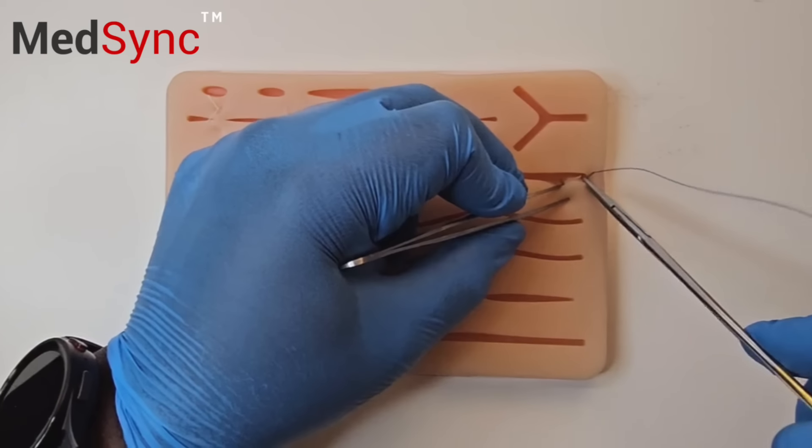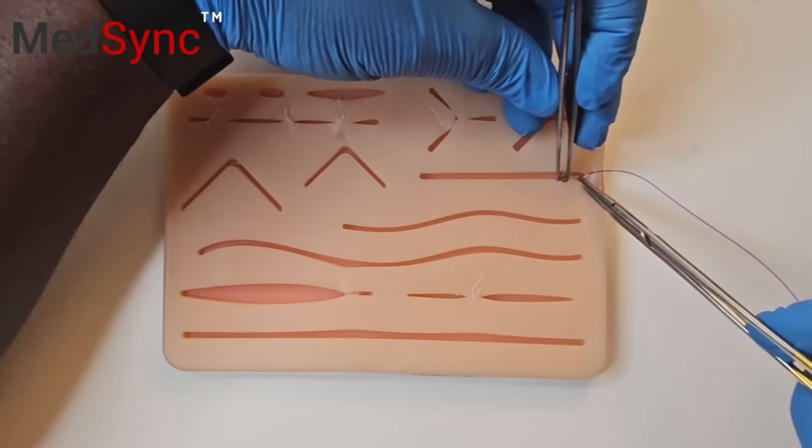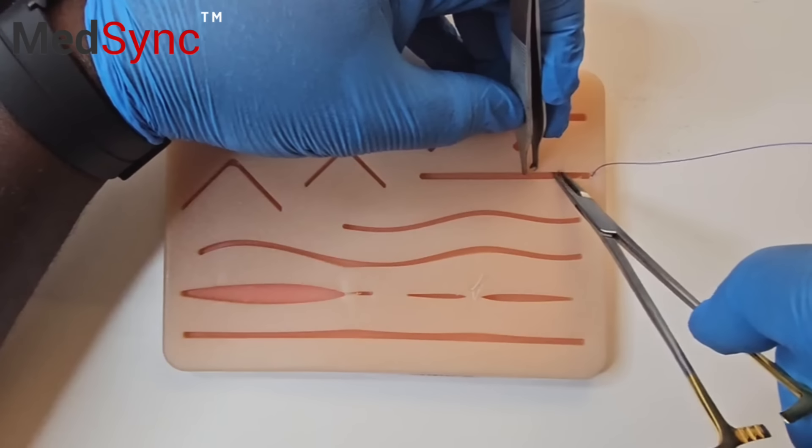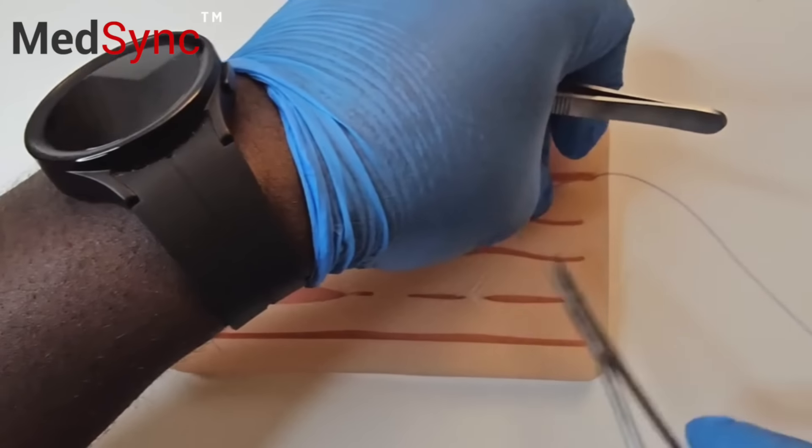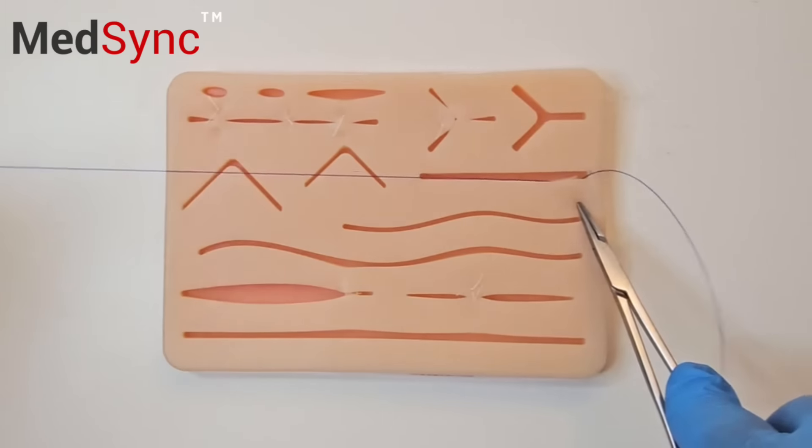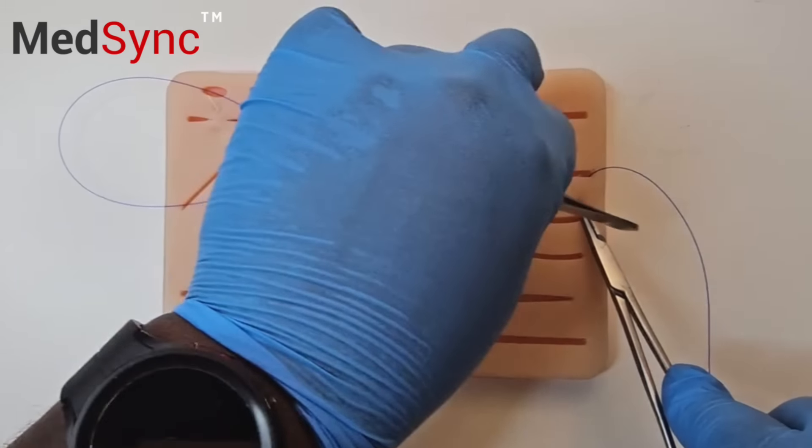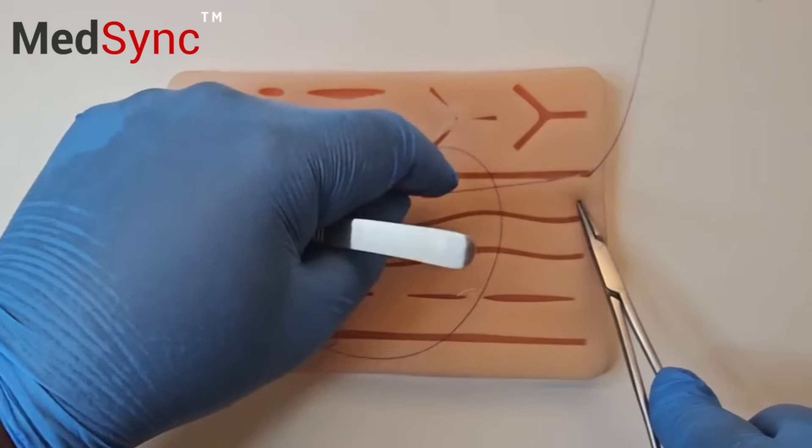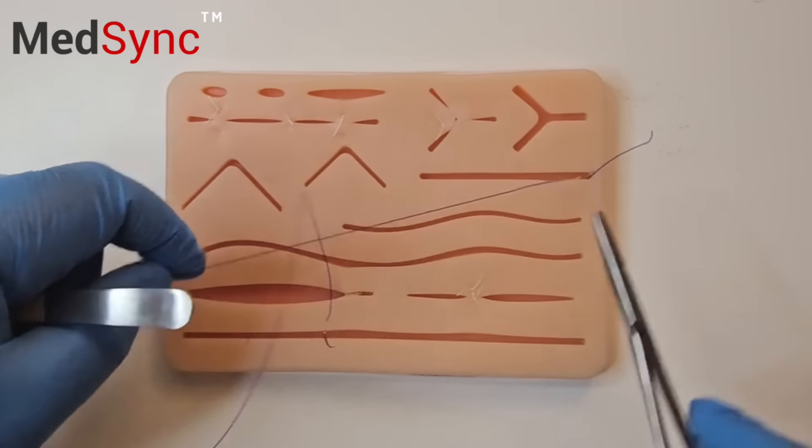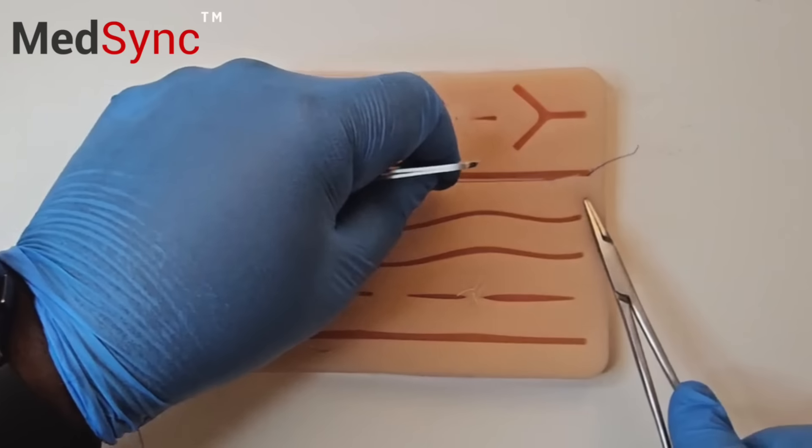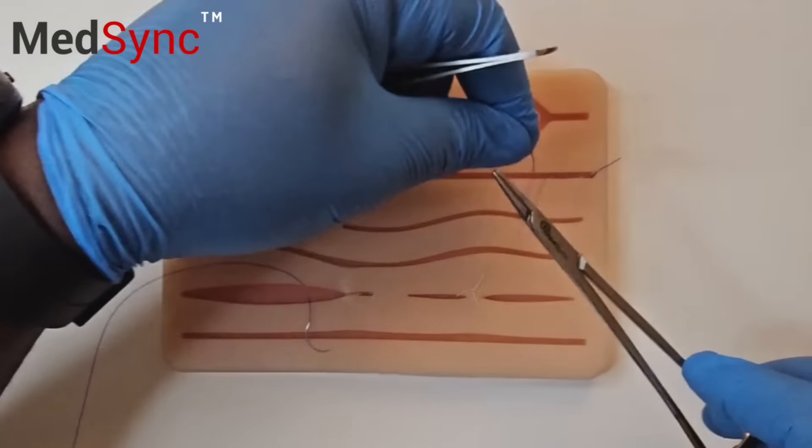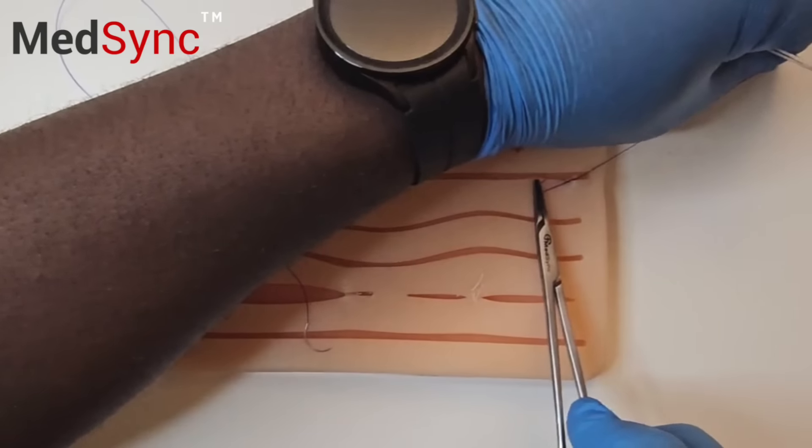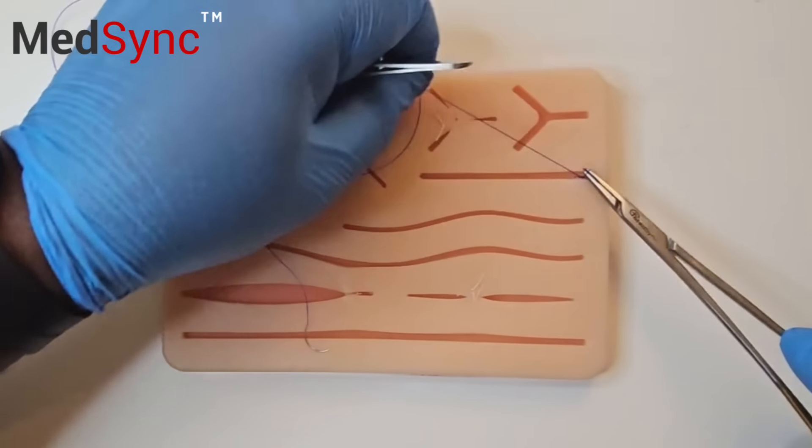You anchor the suture deep inside the wound. A surgeon's knot, followed by two wreath knots.